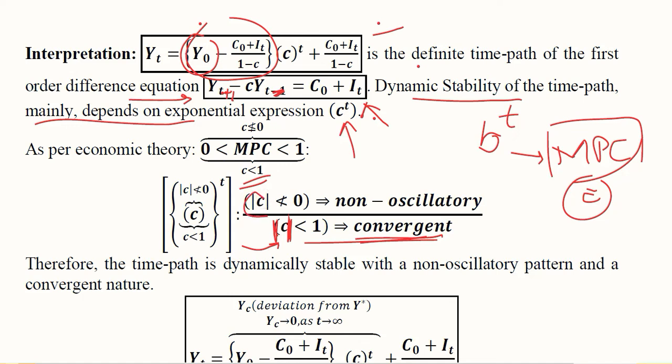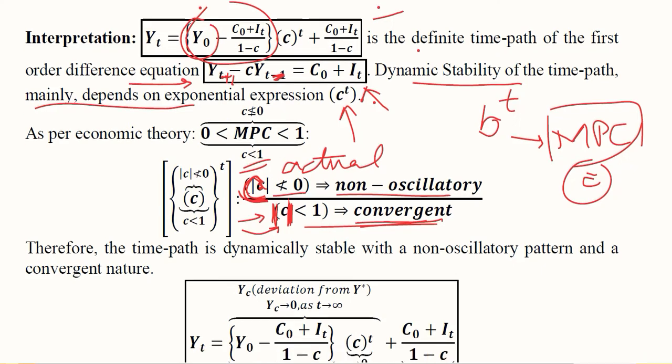The actual value of c (not the absolute value) is between 0 and 1. Since it is not less than 0, the system is non-oscillatory. These are the two findings we have.